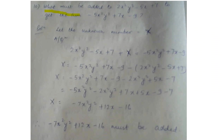Question number 10: what must be added to 2x square y square minus 5x plus 7 to get the sum as minus 5x minus 9? Here they are asking what must be added to get the answer. So let us say the unknown number is capital X — I am not using small x because small x is already used. Please use any letter which is not used. According to the question: 2x square y square minus 5x plus 7 plus capital X is equal to minus 5x square y square plus 7x minus 9.